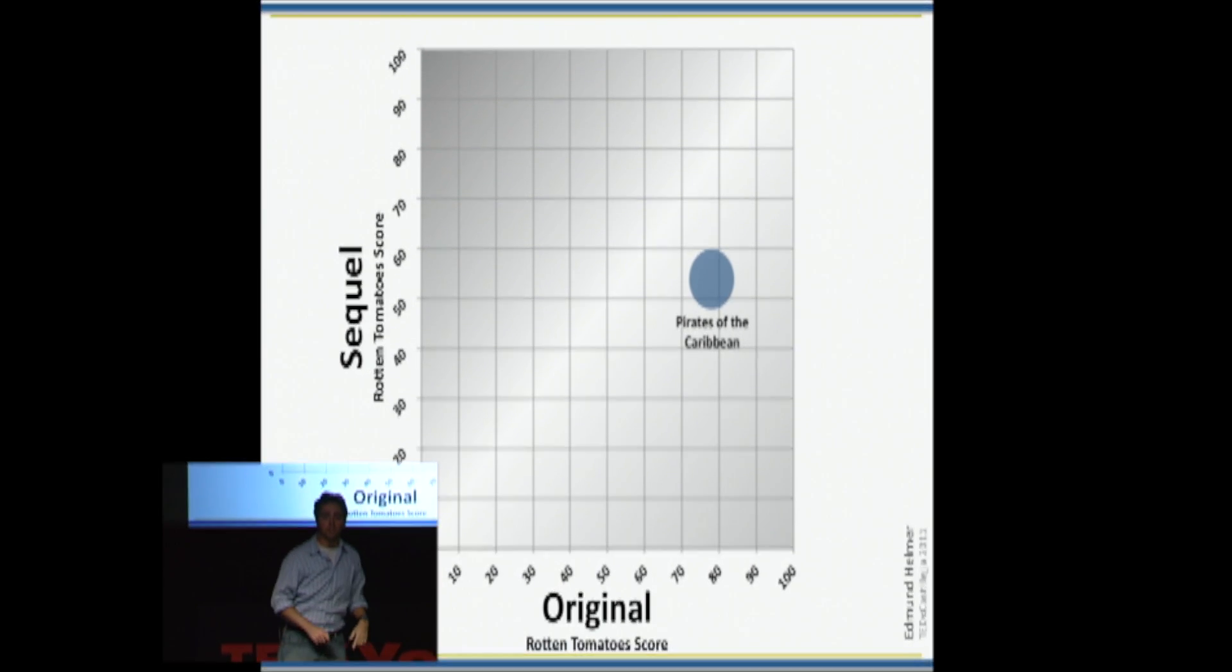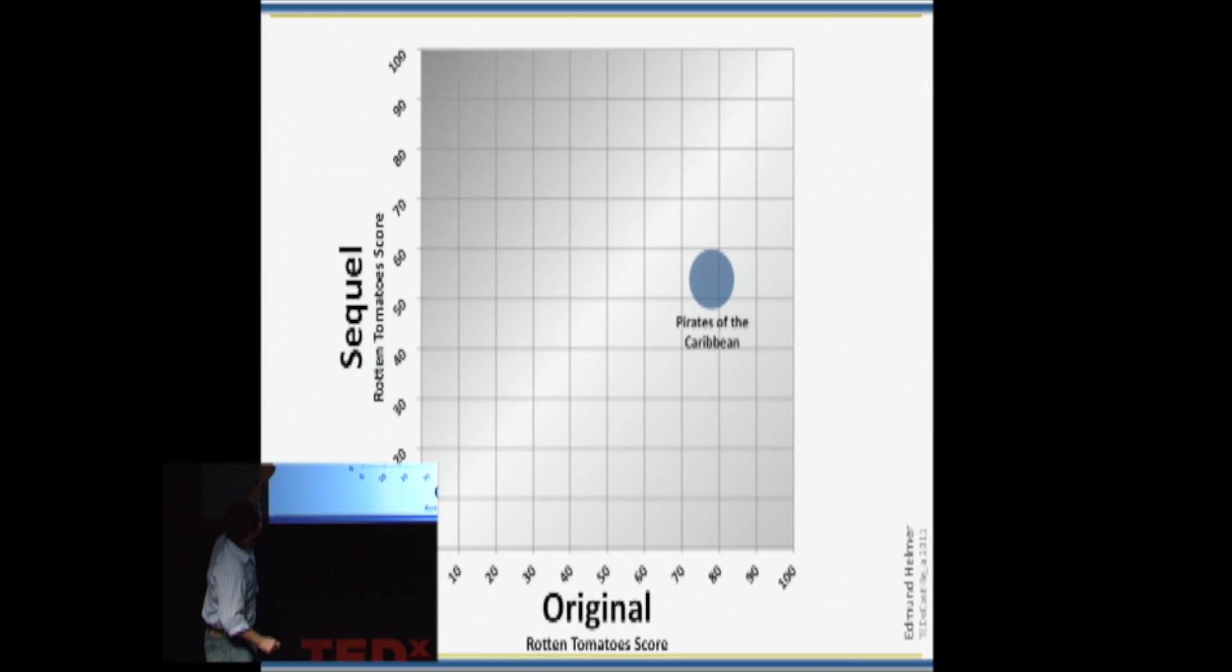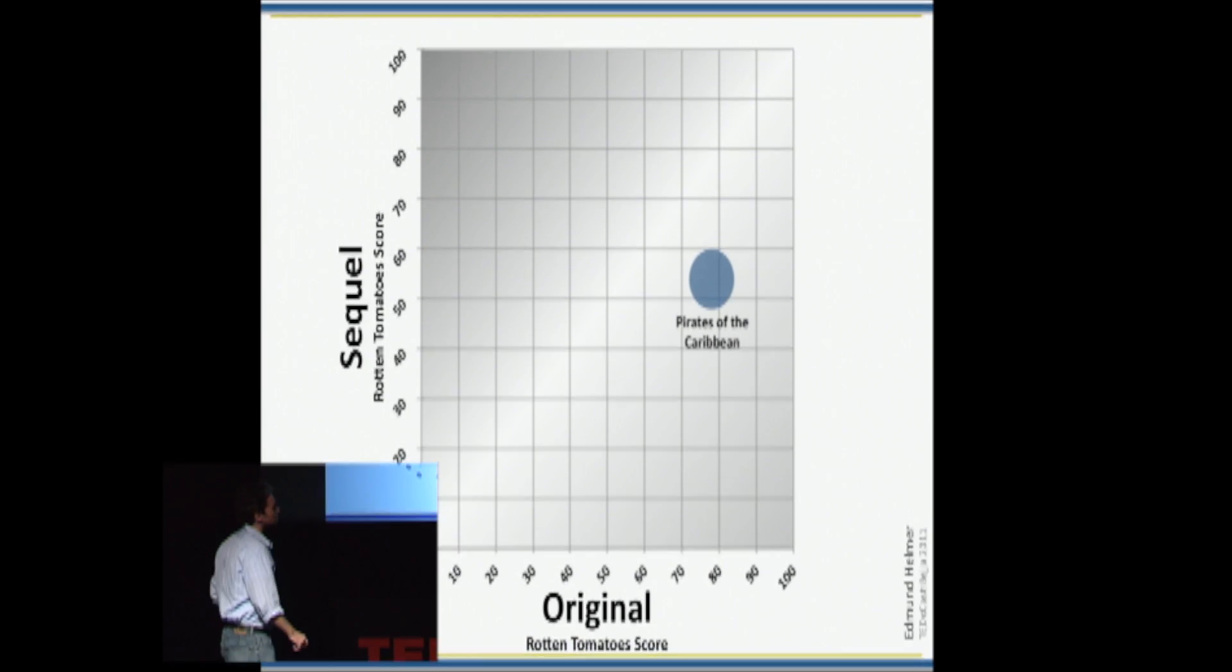You can see it's about 80 points to the right over there. That means about 80% of movie critics liked the original. It's about 55 points high. That means about 55% of movie critics liked the sequel. That's 80 to 55. More people liked the original than liked the sequel. So it's generally considered a better original.